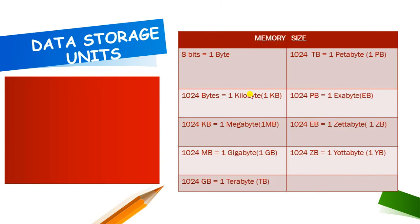Next are data storage units. The computer stores whatever data we give to it — it is stored somewhere. We will study the devices used to store data in detail, but first these are the units. For example, when you buy any vegetable from the market there is a measuring unit for it. When you buy potato, you say 'give me 5 kg of potato' — kg is the measuring unit. In the same way, whenever we store anything in the computer, it is stored in a unit: GB, TB, KB.